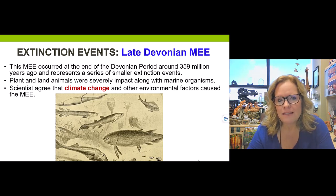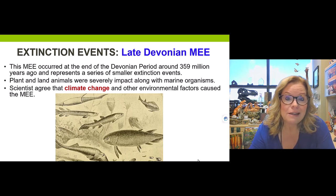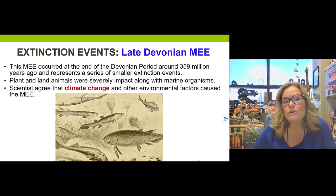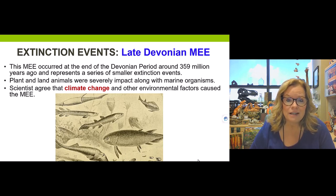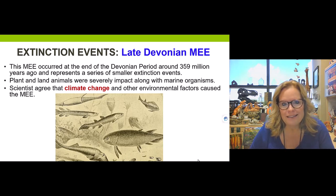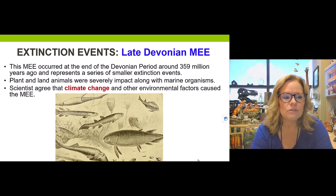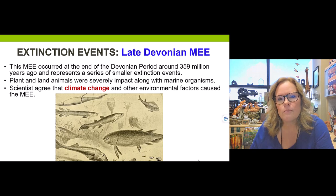Keep in mind that extinctions don't happen all at once. Right around 359 million years ago, at the conclusion of the Devonian period, we see a series of fluctuating sea level changes that created a shift in climate throughout the world. Plant and land animals were severely impacted, and marine life took a significant hit as well. Scientists agree this particular mass extinction event involved a climate change event in conjunction with other environmental stressors.